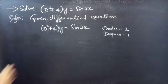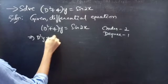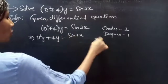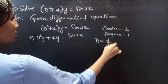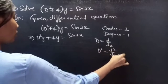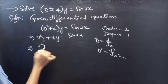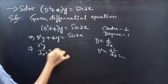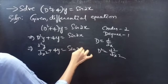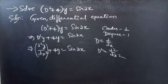We can also write this equation as D²y + 4y = sin 2x. You know that the differential operator D equals d/dx, so D² can be written as d²/dx². We will write D²y as d²y/dx², which is the highest derivative.